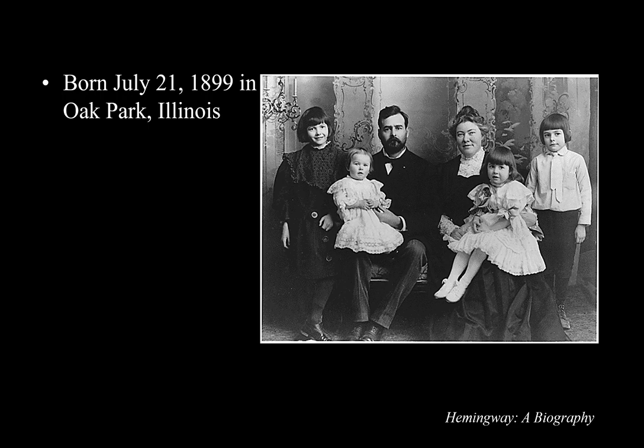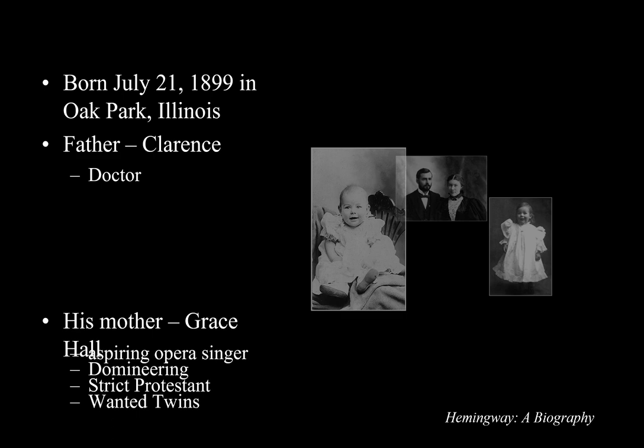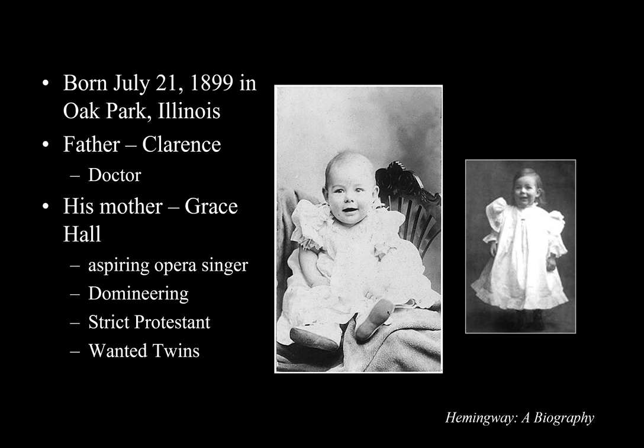He was born July 21st, 1899 in Oak Park, Illinois. This is Hemingway here on the far right. His father was a doctor. His mother was an aspiring opera singer who gave up her chance at a career to stay home and tend to the family. For the first two years of his life he was treated like a girl. His mother always wanted to have twins, so she pretended that Ernest Hemingway was a girl and the twin sister of his sister who was close to him in age.